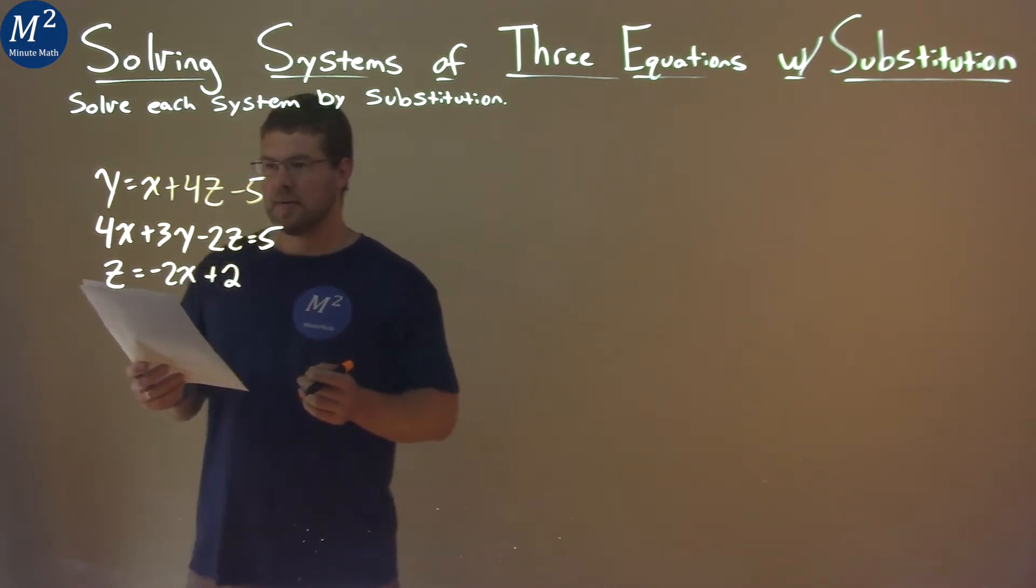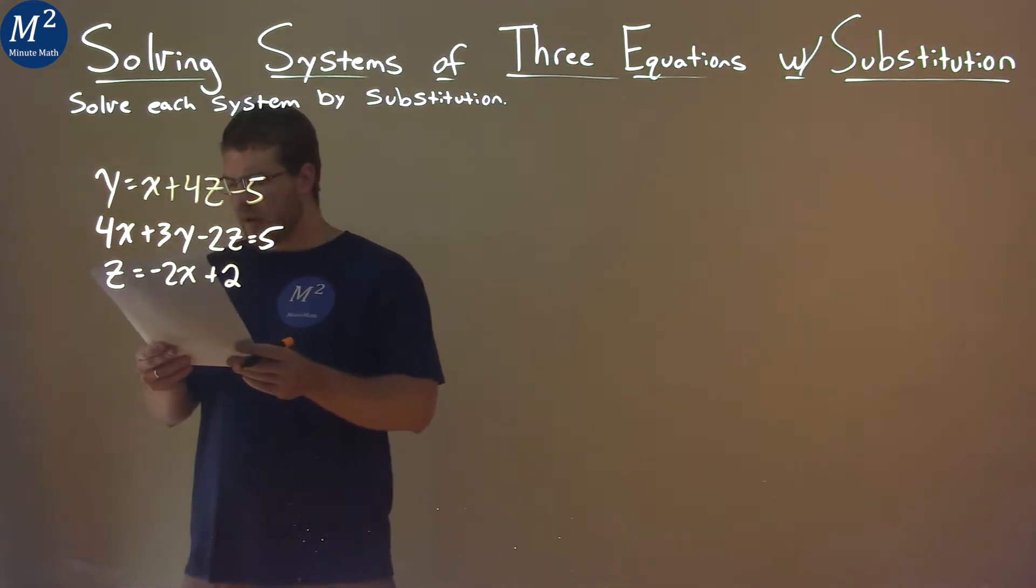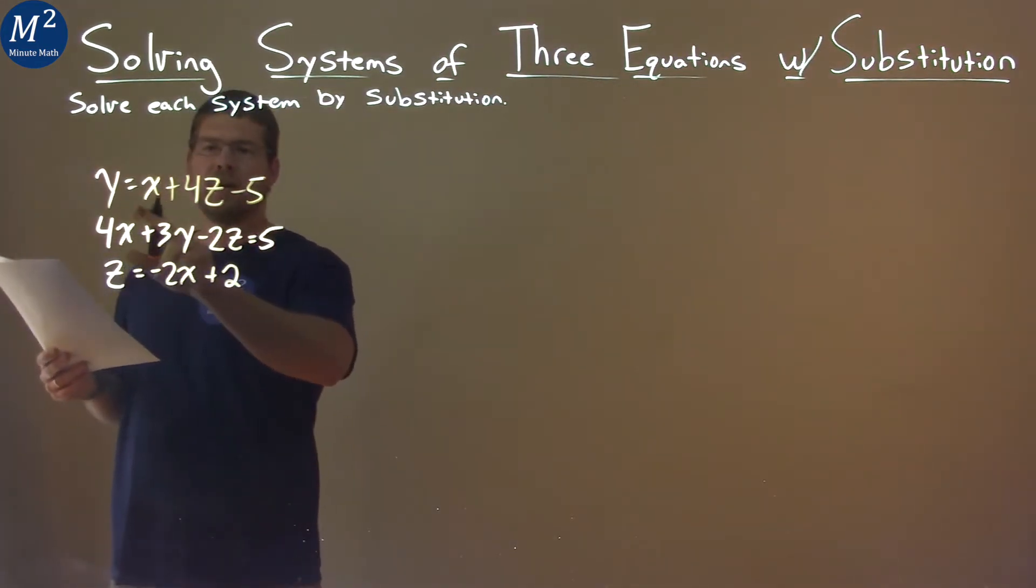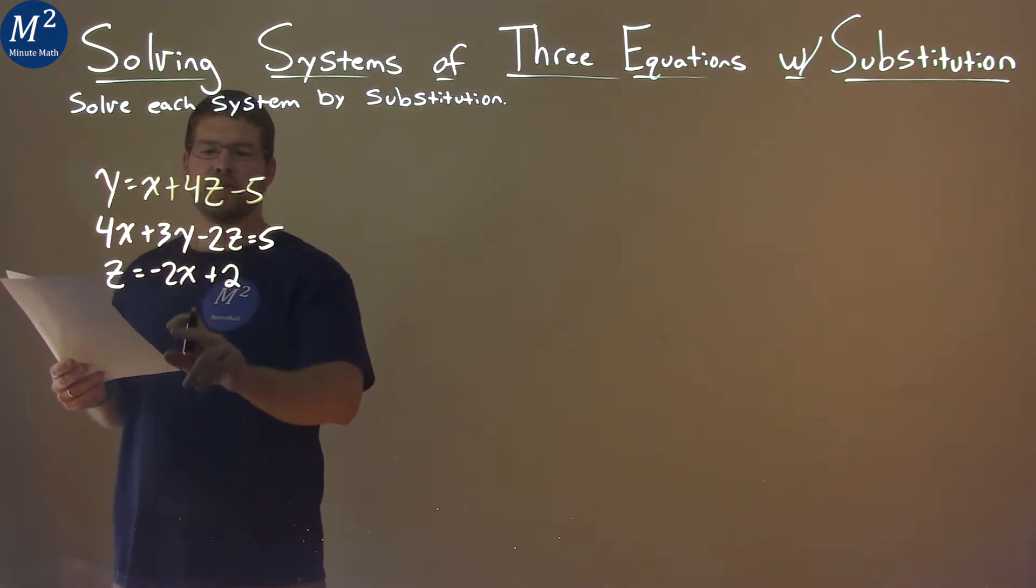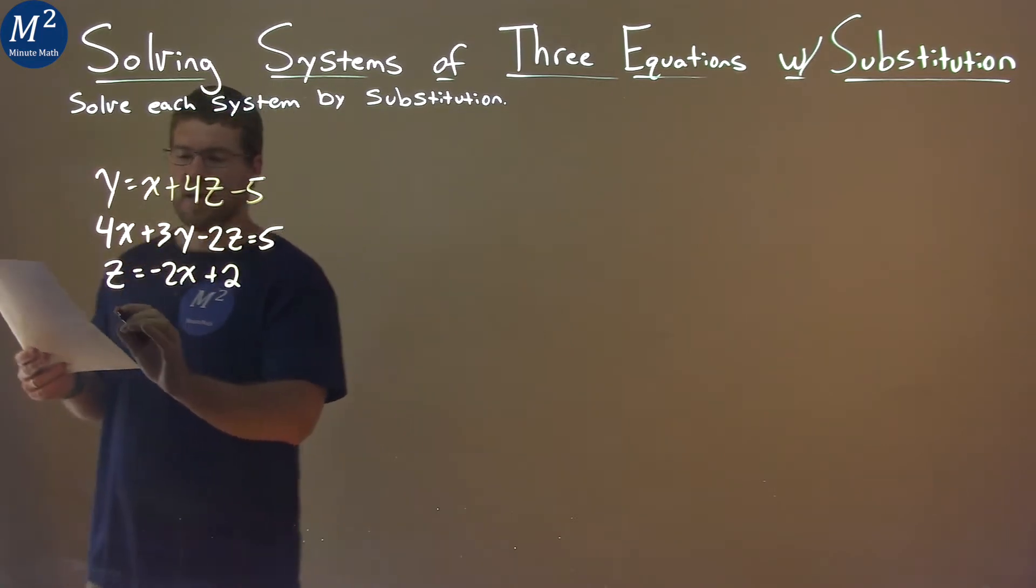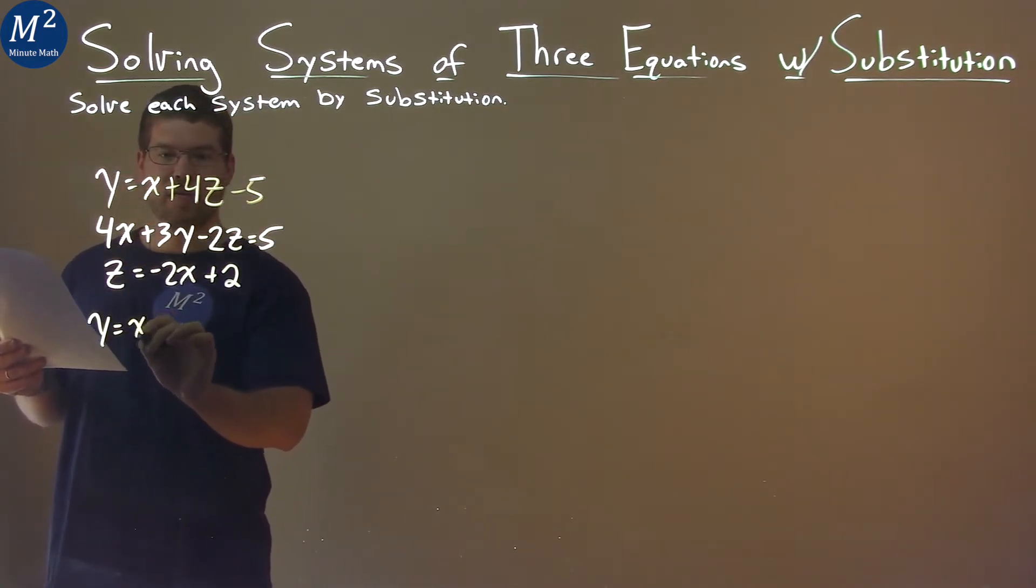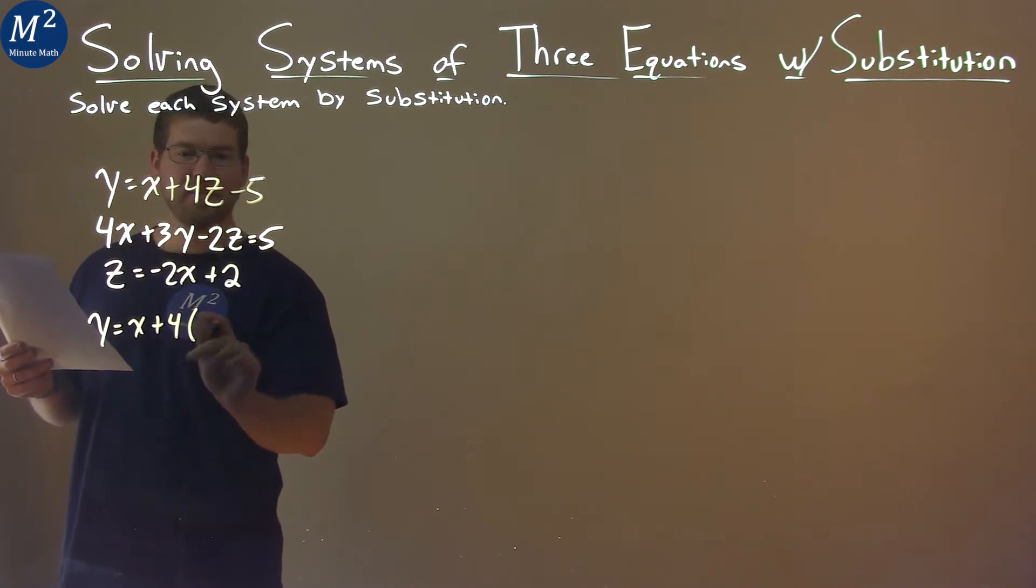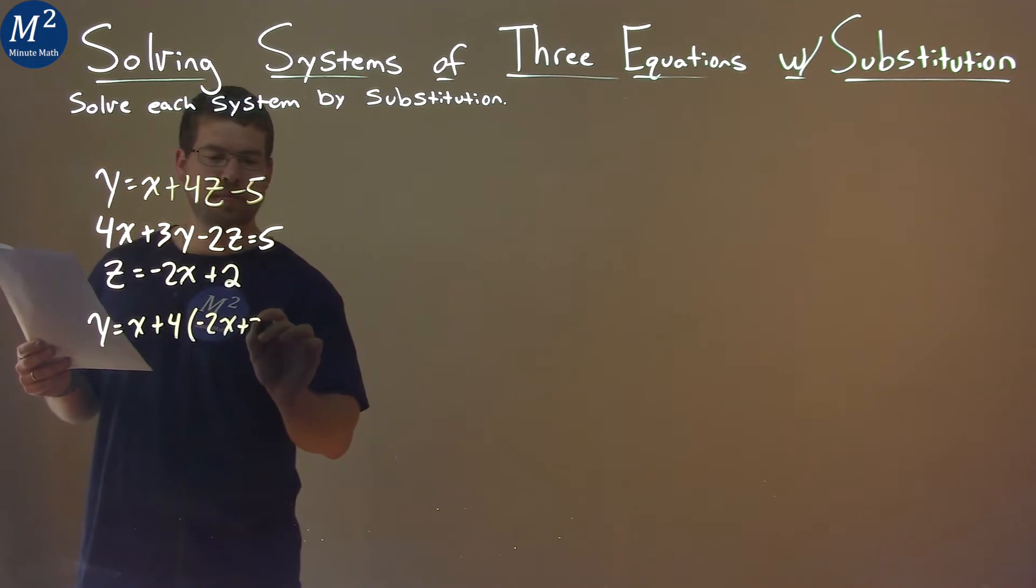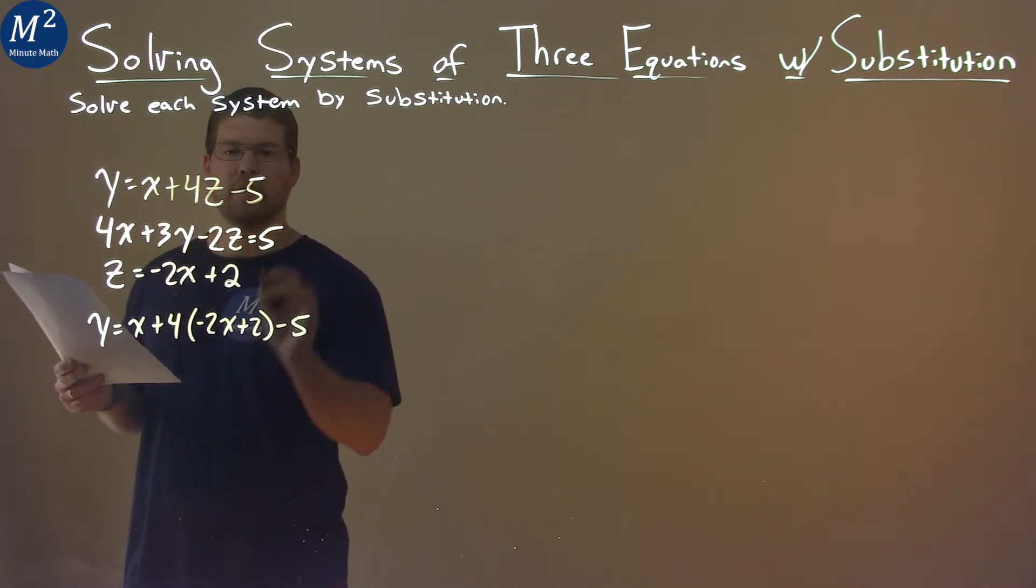The first thing I'm looking at here is I want to get y in terms of x and z, and I have z by itself. So I'll take that first equation here, y = x + 4, and instead of z, I'm going to put what we have here with z, -2x + 2, minus 5 there.